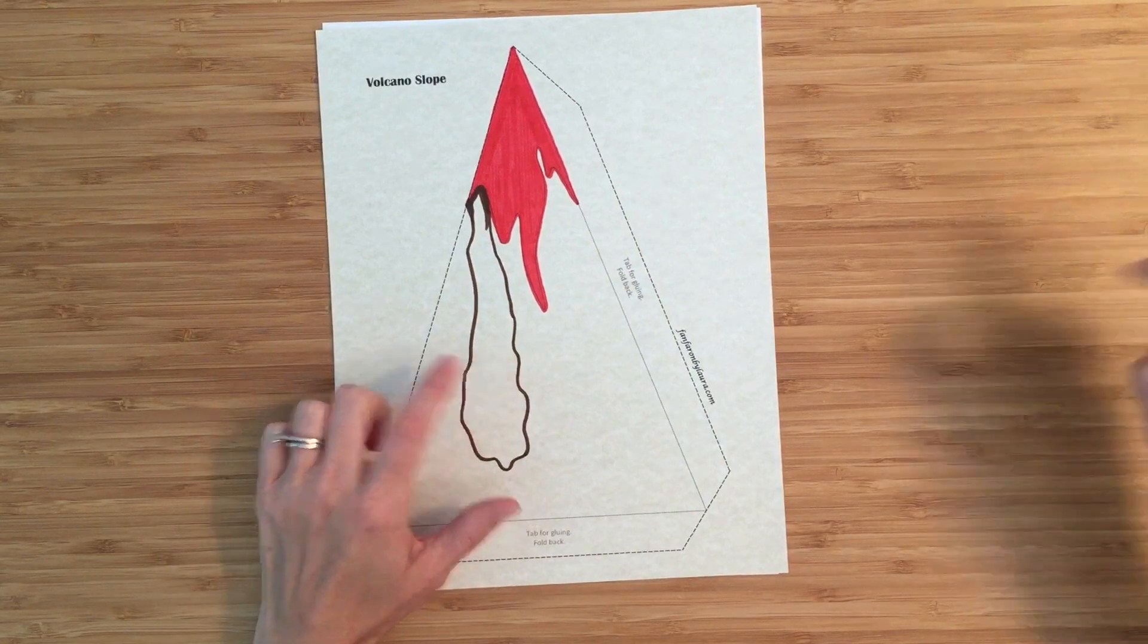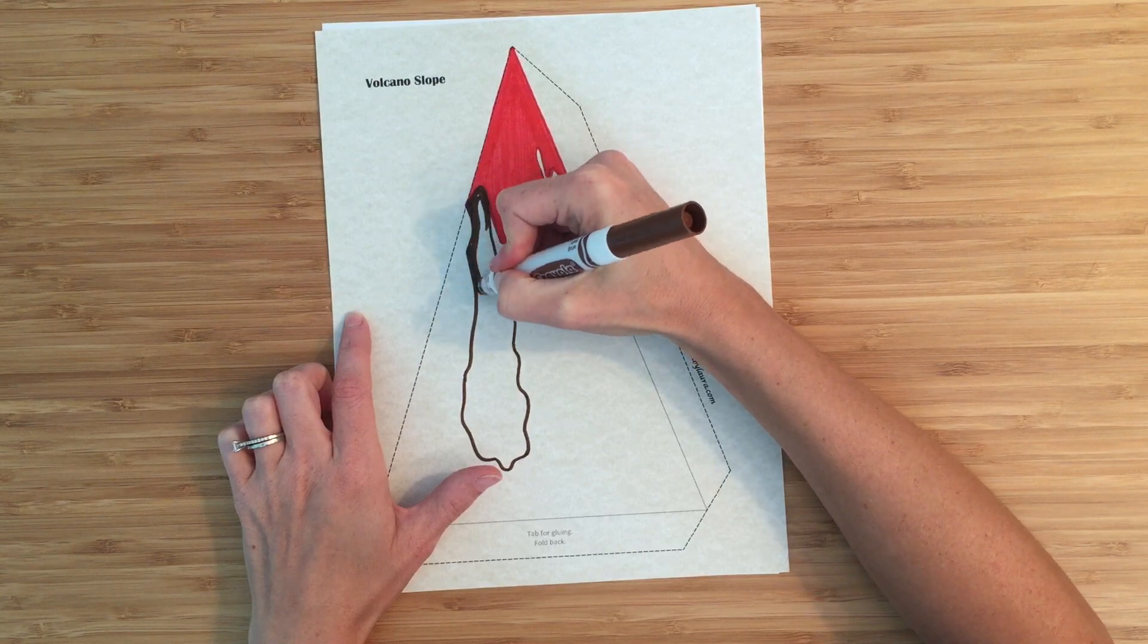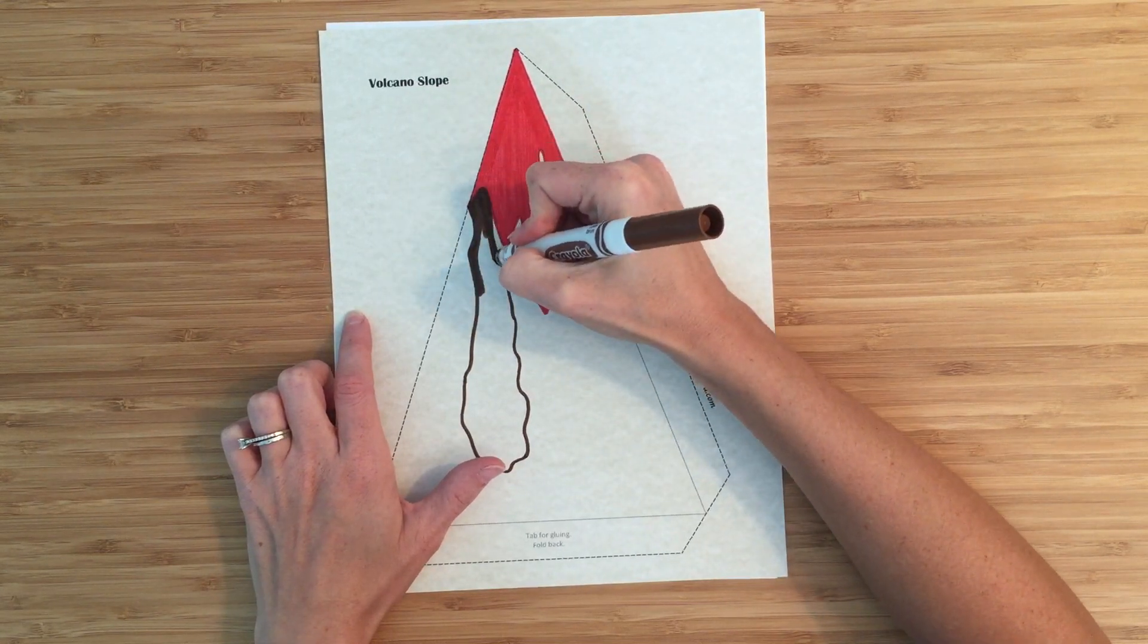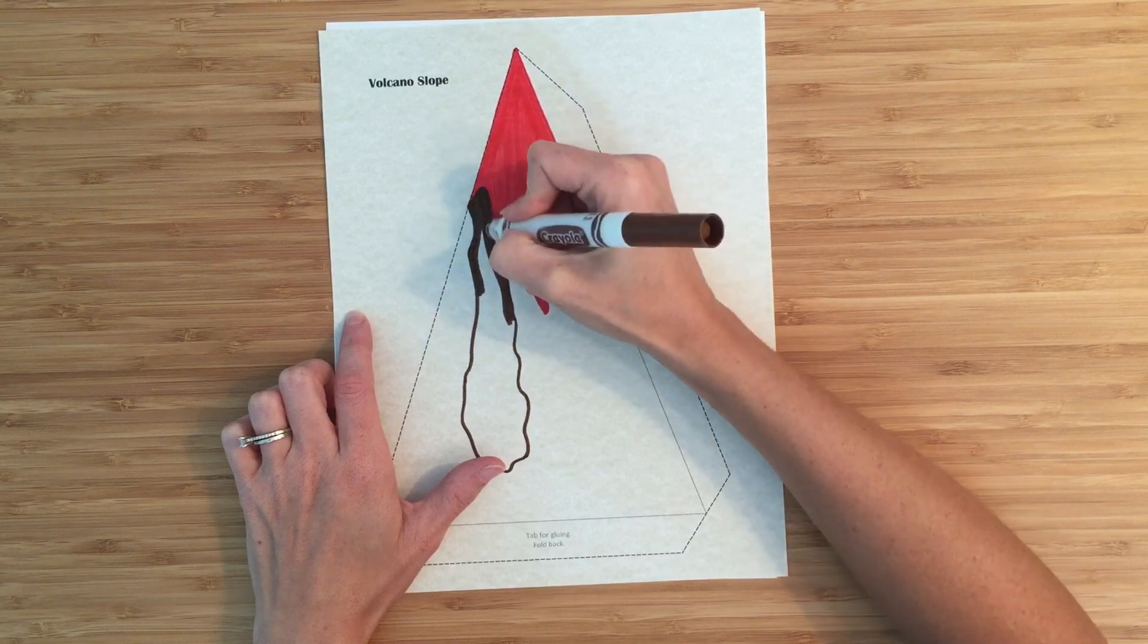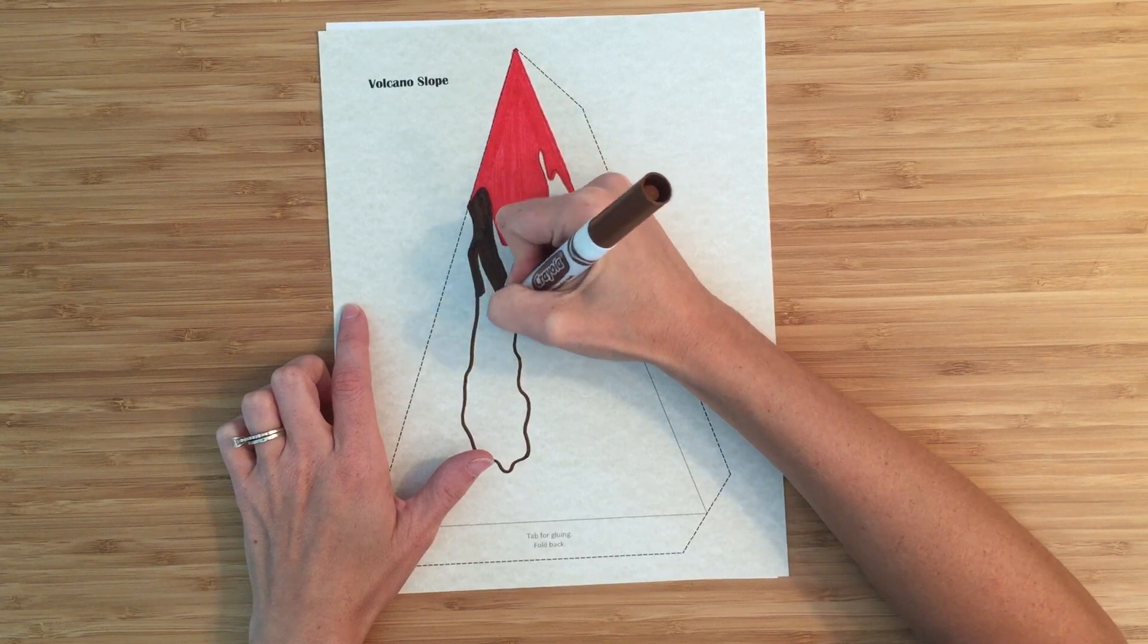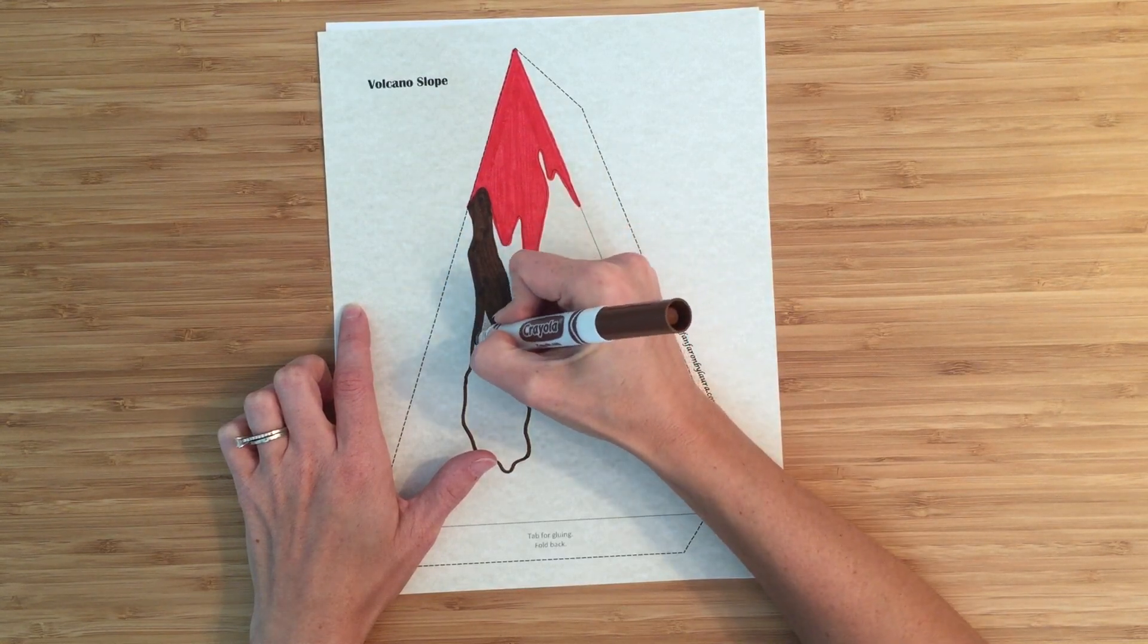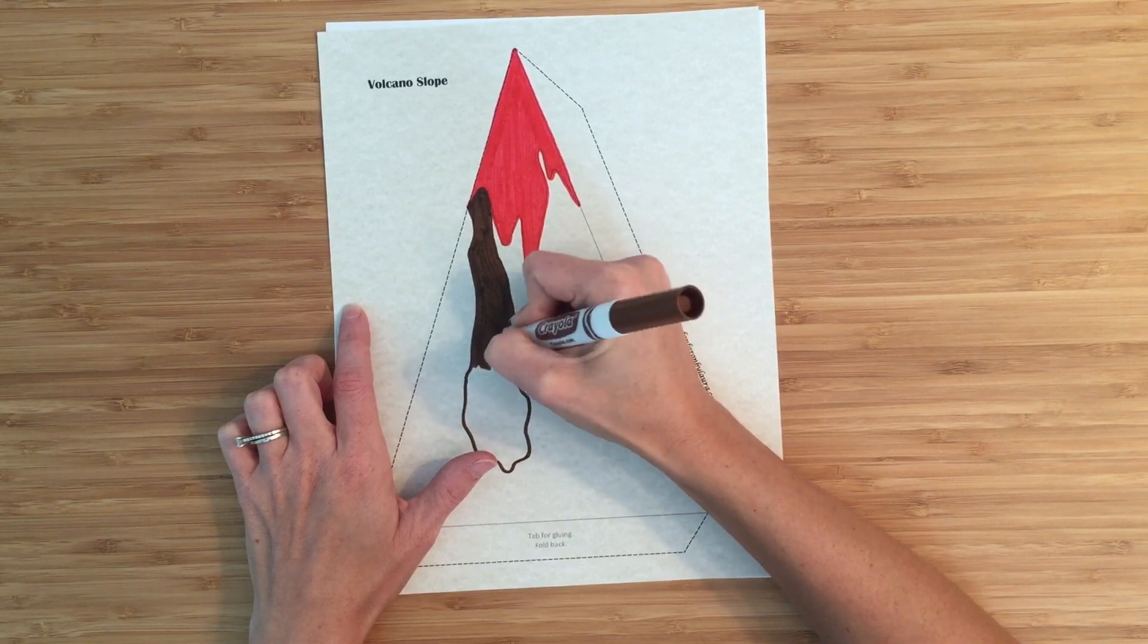Now there's something else on this side. And this is lahar, which is like mud flows. It's like rock and water and all kinds of stuff mixed together that can go down the side of the mountain. It might also be called pyroclastic, I hope I'm saying that right, flow. And this is real dangerous stuff because it moves really fast and it can just take out anything that's in its way. So I'm making that brown because I know it's made up more of the rocks and the earth that are moving down the side.